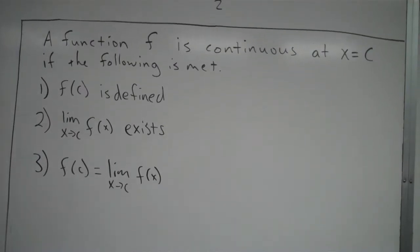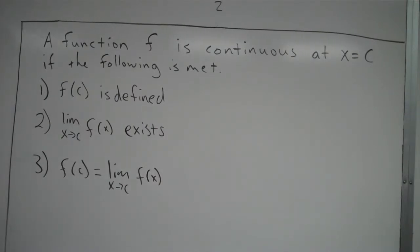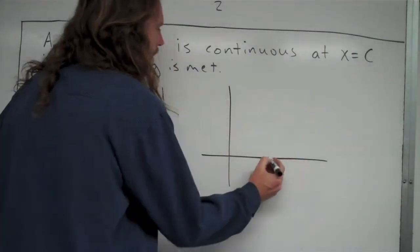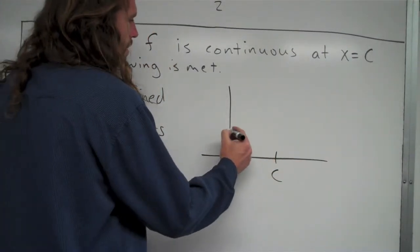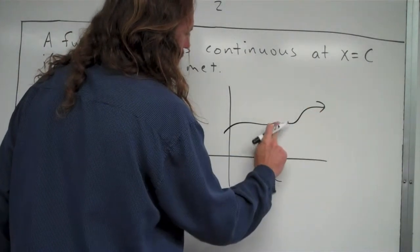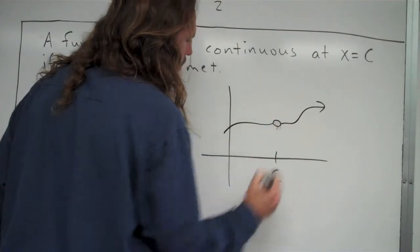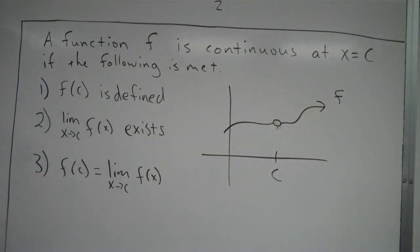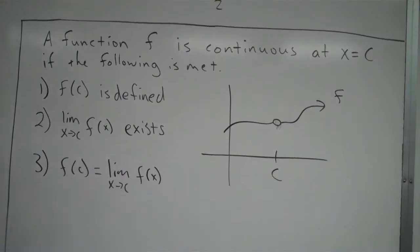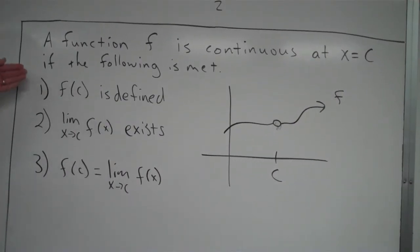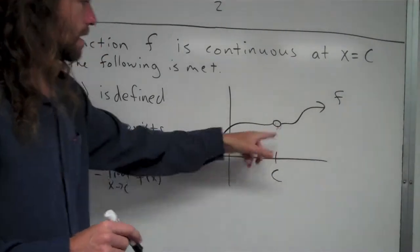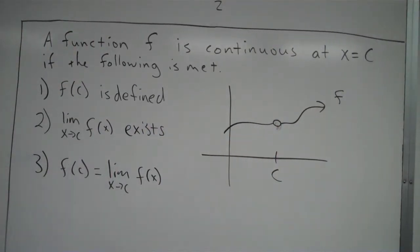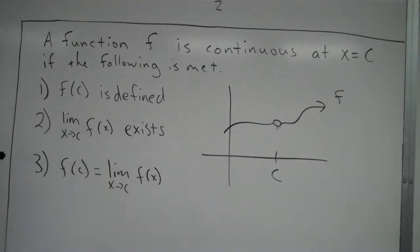One of the easiest ways to see why those are the three conditions is to look at examples where a condition is not met. Let's say we have a graph f with an open hole at x equals c. This graph is not continuous at x equals c — there's a hole in the graph. Right from the get-go, condition one breaks down because f of c is not defined. At x equals c there's no value for f, so it does not meet requirement one, and therefore this is not continuous at x equals c.